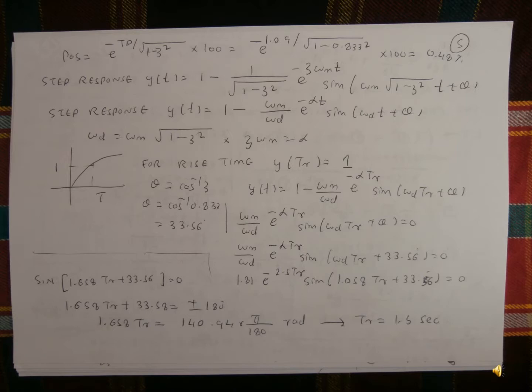y(t) equals 1 minus ωn by ωd, multiplied by e to the power of minus α·tr, times sin of ωd·tr plus θ. Setting this equal to 1, we get: ωn by ωd multiplied by e to the power of minus α·tr times sin of ωd·tr plus θ equal to 0. Continuing, e to the power of minus α·tr times sin of ωd·tr plus 33.5 equals 0.